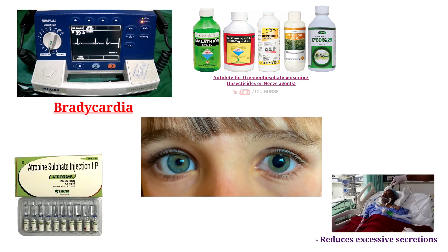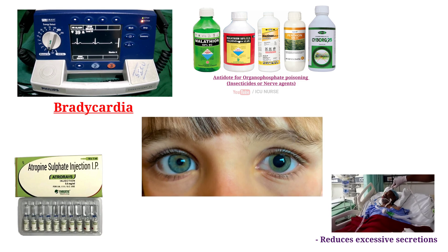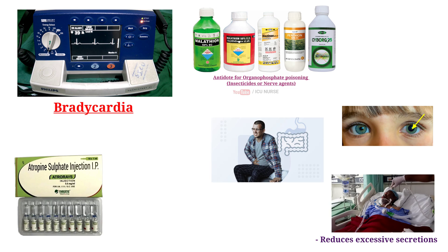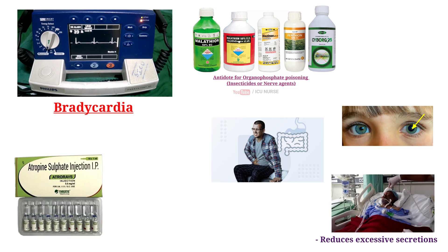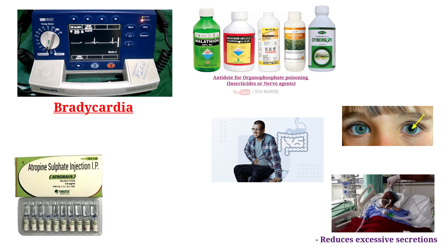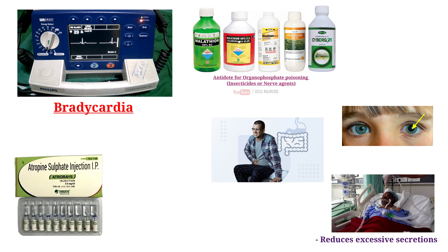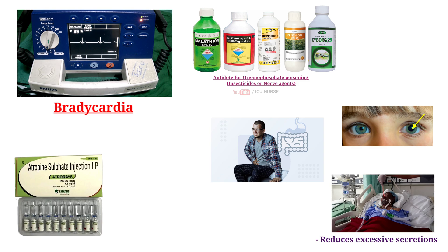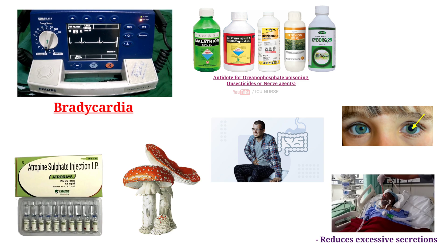Atropin induces pupil dilation for ophthalmologic examinations. Atropin is useful in the treatment of gastrointestinal disorders by reducing stomach acid, relaxing muscles and relieving spasms in the intestines. This provides relief from conditions like ulcers and irritable bowel syndrome. It is also used in the treatment of mushroom poisoning.